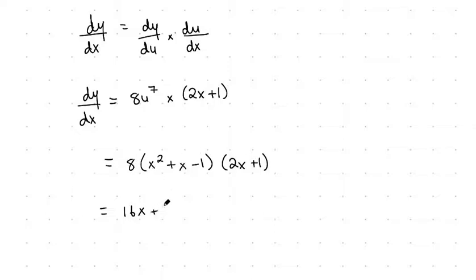8 by 1, so plus 8, and that's all multiplied by—sorry, there is a 7 there—so we've got x squared plus x minus 1 to the power of 7.